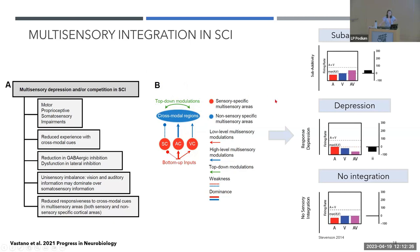This theory states that, as an opposite of a super-additive effect, we could observe a sub-additive effect — where the response to a bimodal stimulus is less than the summed probability of unimodal stimuli — or depression, where the bimodal response is less than the unimodal response, or even no integration at all, where the response to unimodal or bimodal stimulation is the same.